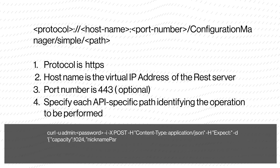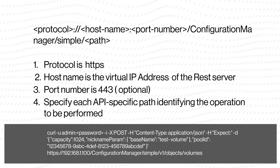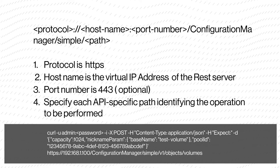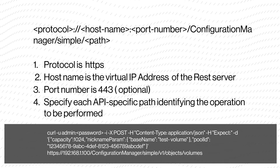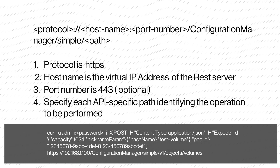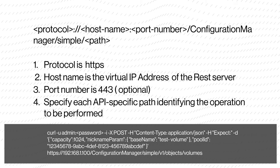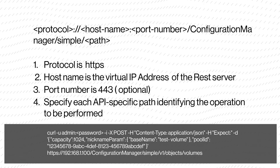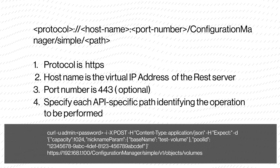In this example, a curl command is used to create a new volume using the REST API. The password, pool ID, and IP address are unique to each VSS Block cluster.